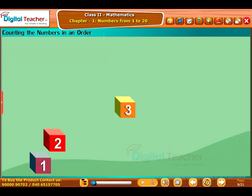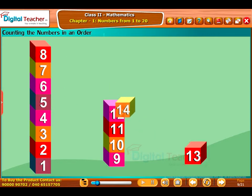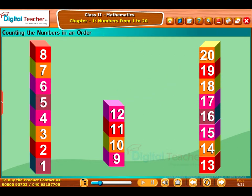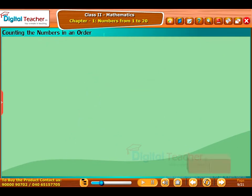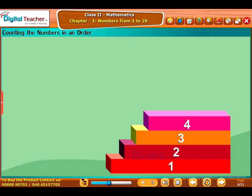Counting the numbers in an order: Now, let us know how to count the numbers in an order. For example, in the process of climbing up the stairs, we term step number one as the first step, step number two as the second step, number three as the third step, number four as the fourth step,